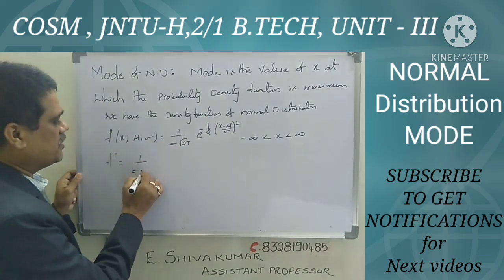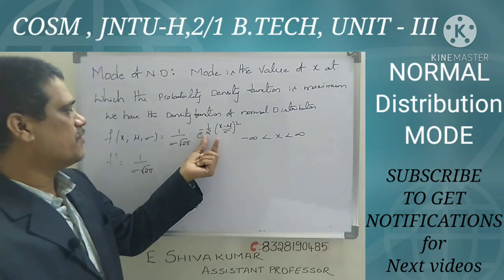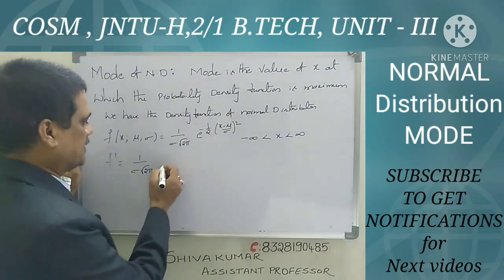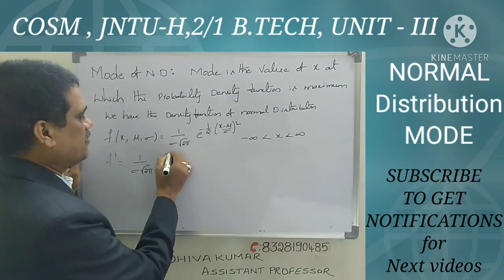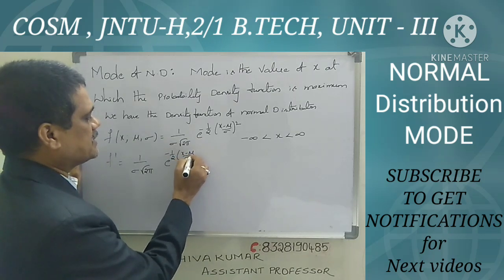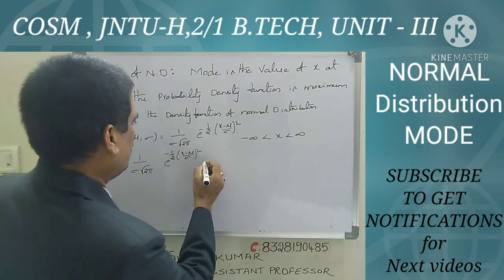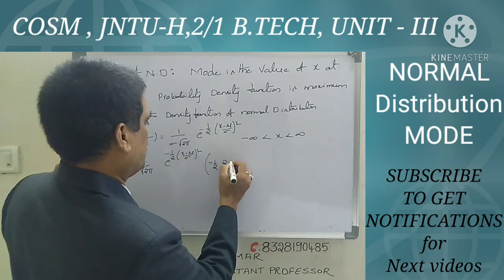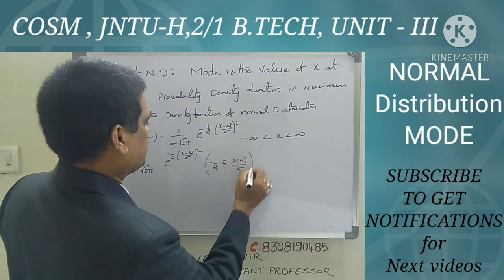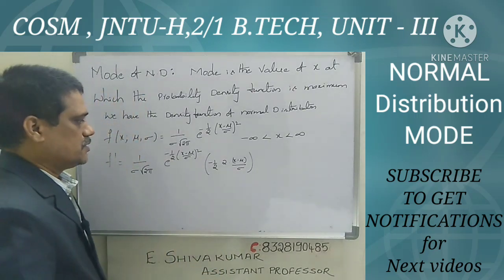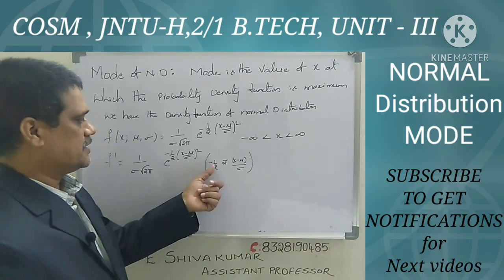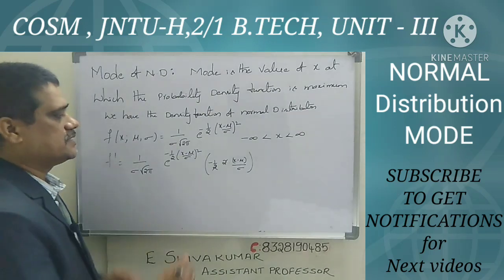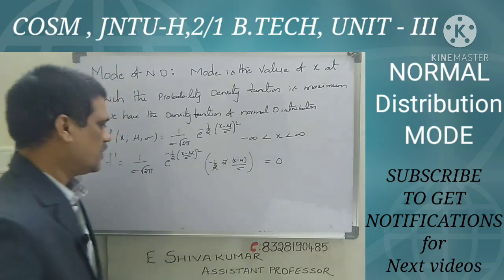Finding f'(x): the constant 1/(σ√(2π)) remains, and the derivative of e^(−1/2·((x−μ)/σ)²) gives e^(−1/2·((x−μ)/σ)²) · (−1/2) · 2 · (x−μ)/σ. Simplifying, these factors cancel to give −(x−μ)/σ as the derivative.